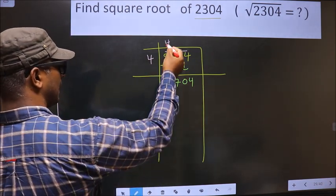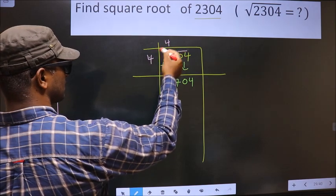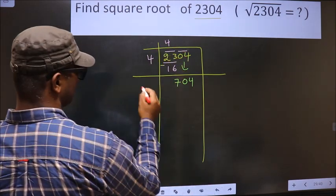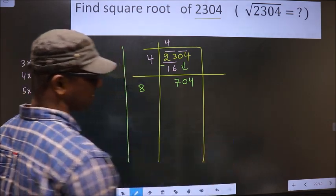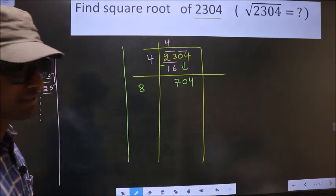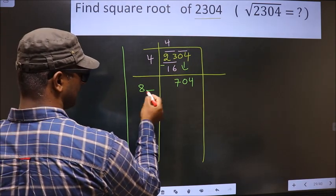Here we should add these 2 numbers. That is 4 plus 4. We get 8. Okay, next. Now we should write a number here.